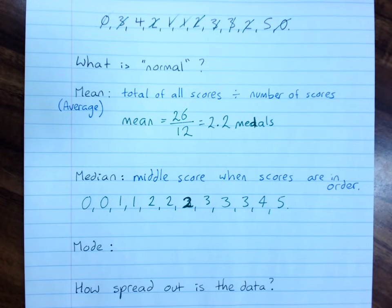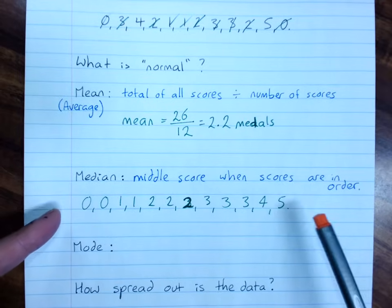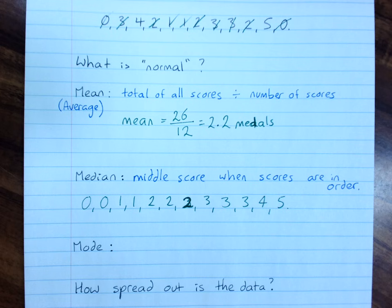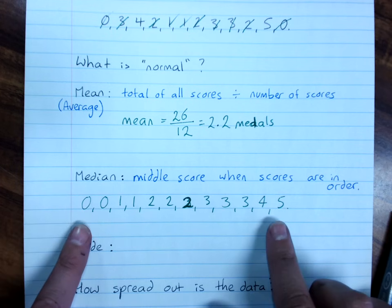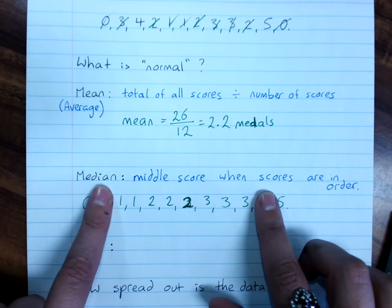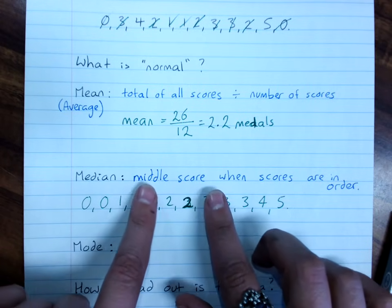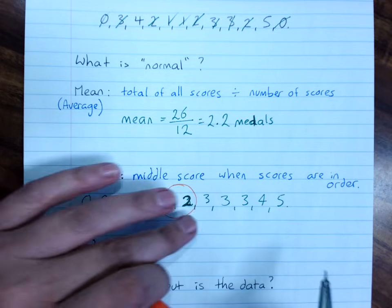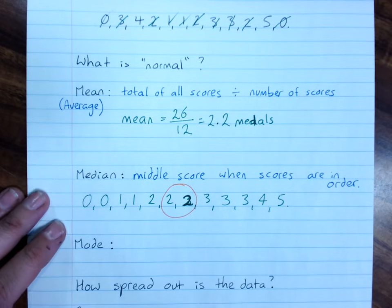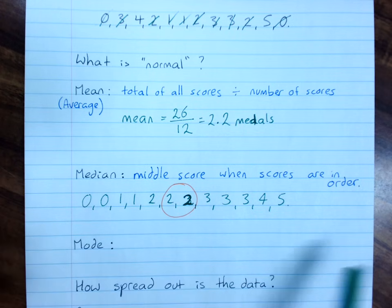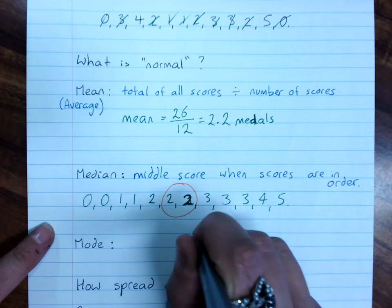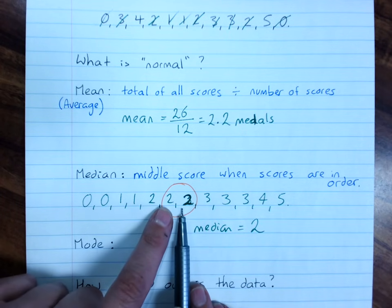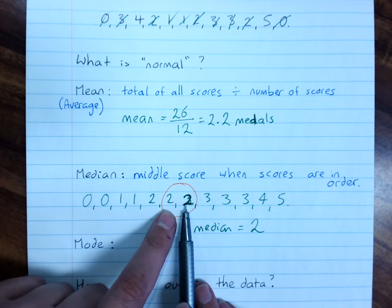Now when it's an even number of people, finding the median means I actually have to find the average of the two middle scores. Because if we count in, the median is between those two. Now if they're both the same, that's easy. I can say the median equals two, because the average of two and two is two.